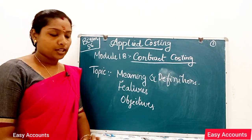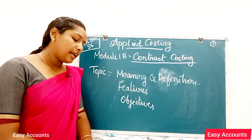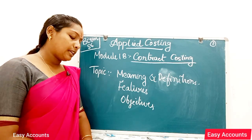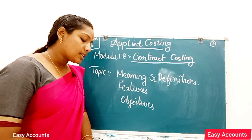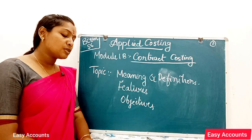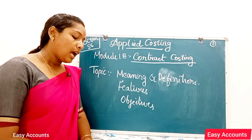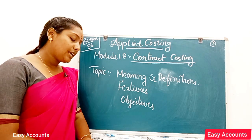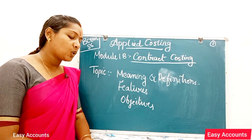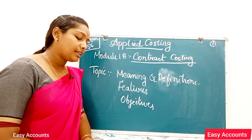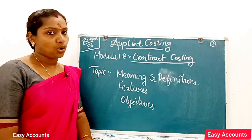Contract costing is defined as that form of specific order costing under which each contract is treated as a cost unit and the costs are accumulated and ascertained separately for each contract.